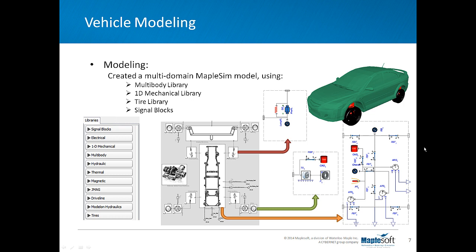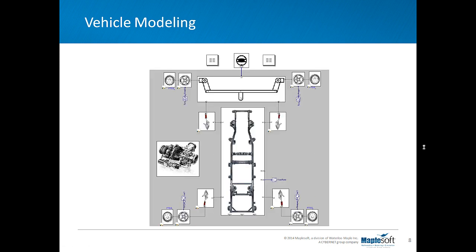In this slide you can see schematic diagram of the vehicle grouping different subsystems like chassis, suspension, and wheels. The MapleSim libraries properties used in this model are multi-body, 1D mechanical, tire, and signal blocks. Now let's take a look at inside the chassis subsystem.